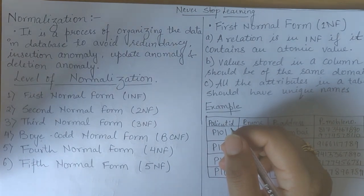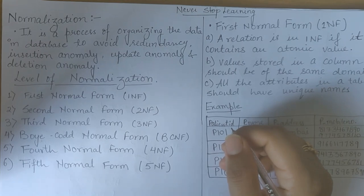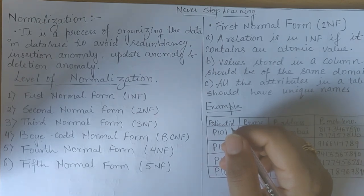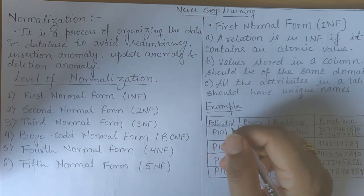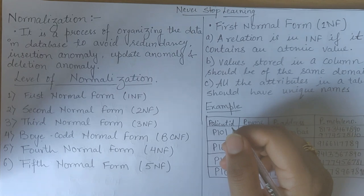Anomalies are the problems that can occur in a poorly planned or unnormalized database where all the data is stored in one table. We studied three types of anomalies: insertion anomaly, updation anomaly, and deletion anomaly. Basically, normalization is a process of organizing the data in a database to avoid redundancy, insertion anomaly, update anomaly, and deletion anomaly.